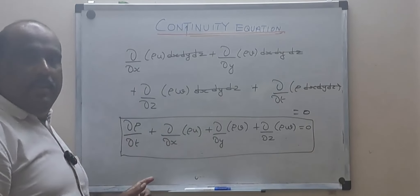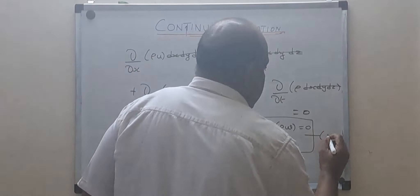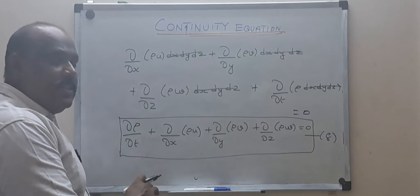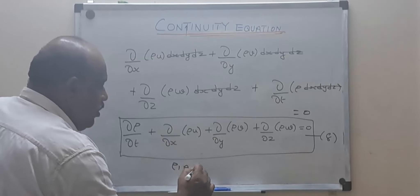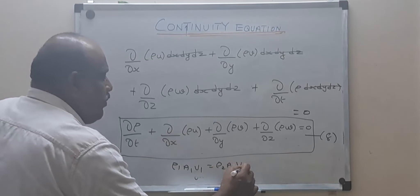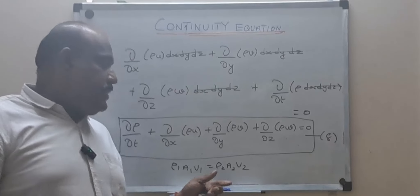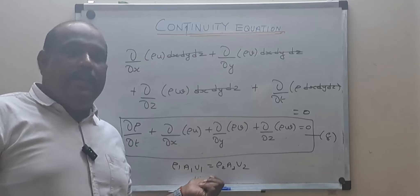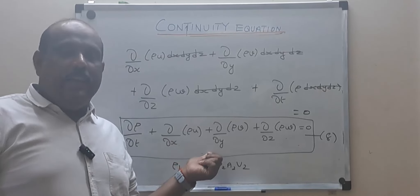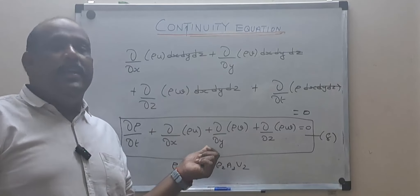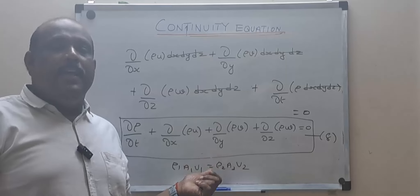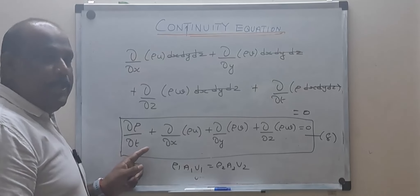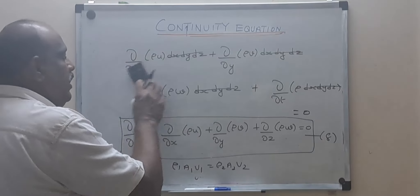Cancelling the common volume term dx·dy·dz from all terms gives: ∂ρ/∂t + ∂(ρu)/∂x + ∂(ρv)/∂y + ∂(ρw)/∂z = 0. This equation is known as the continuity equation. It has the same physical principle as ρ₁A₁V₁ = ρ₂A₂V₂ — conservation of mass — but gives values at each and every point in space and time, making it far more powerful than the average form.